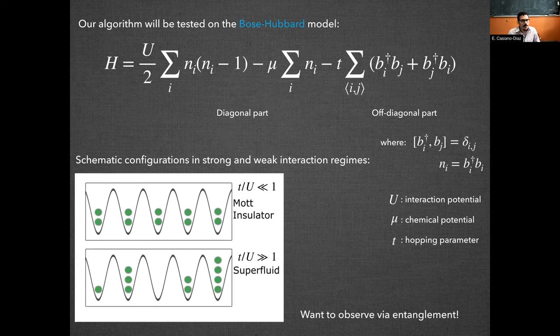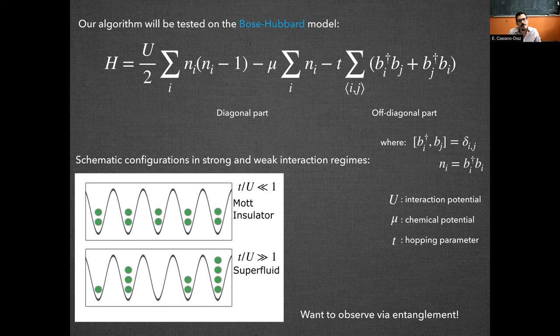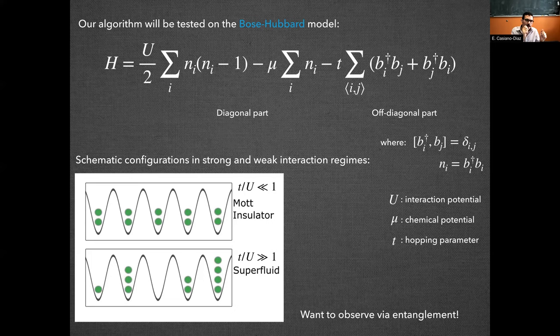To test our algorithm, we will be using the Bose-Hubbard model. So from left to right, we have tunable parameters U, mu, and t, which are the interaction potential between the bosons, the chemical potential, and the hopping parameter. We also have the particle number operator N_i, which counts the number of particles on that site, and we have the bosonic creation and annihilation operators. I would like to add that the diagonal part of this Hamiltonian will be composed of this interaction part and the chemical potential part, whereas the kinetic term will be off-diagonal.